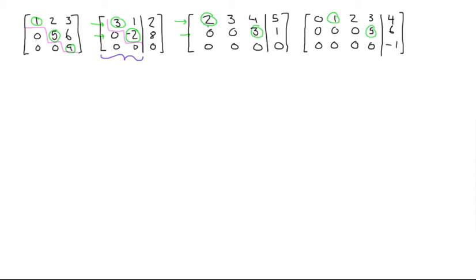This staircase approach works on different shapes of matrices too, so it's a good way to test. You can draw the staircase, make sure your leading variables are there, and verify you're seeing all zeros below it. All of the space below the staircase made around the leading variables is all zeros.